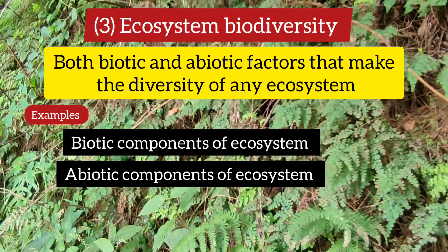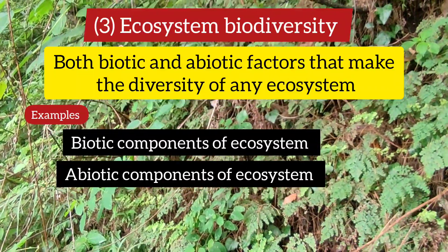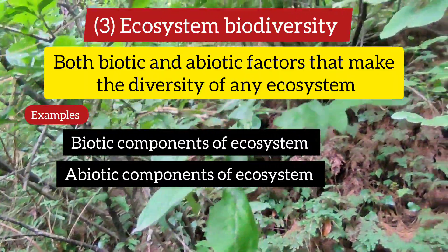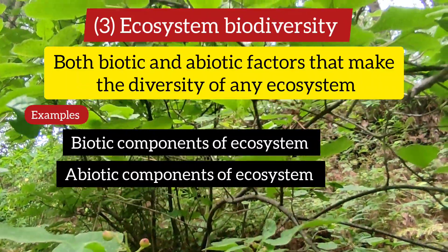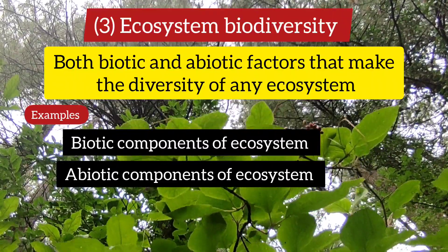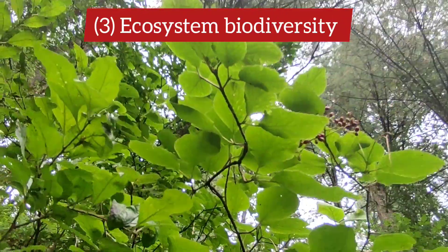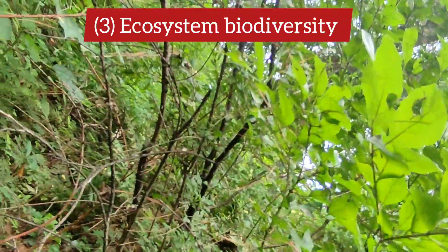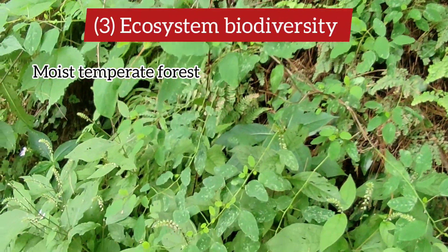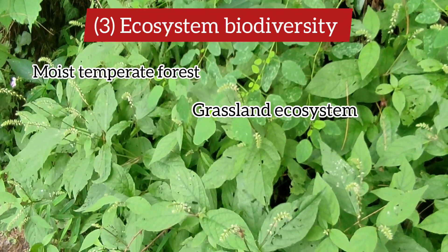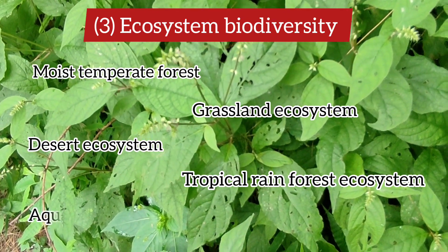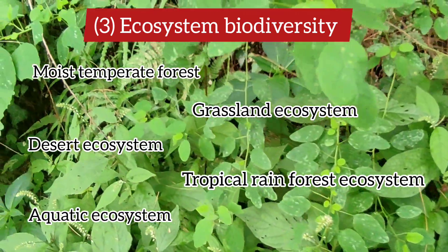The diversity in both biotic and abiotic components defines ecosystem biodiversity. Here in this moist temperate forest you see a combination of diversities: diversity of plants, families, species, genera, birds, mammals, insects, fungi, algae, and diversity in light, temperature, water, soil, and minerals. The whole ecosystem representing this diversity is called ecosystem biodiversity, which includes community biodiversity, population biodiversity, and overall ecosystem diversity. There are diverse ecosystems in nature: moist temperate forest, grassland, desert, tropical rainforest, and aquatic ecosystems.